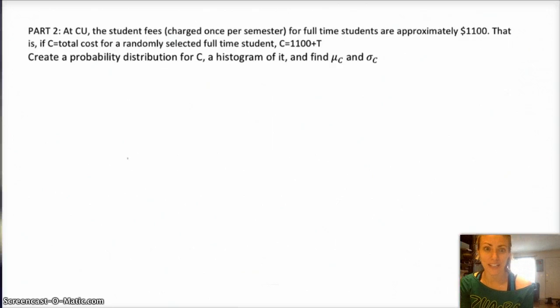So anyways, student fees, clubs and things like that. Anyways, approximately $1,100. And we'll call C, our new random variable, which is the total cost for randomly selected full-time student. So that now, we're adding $1,100 to our previous tuition.